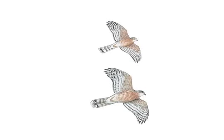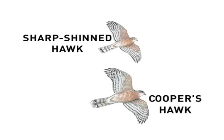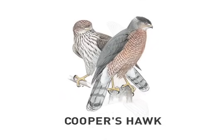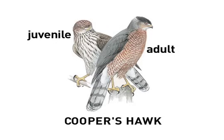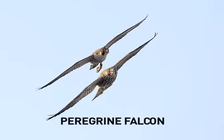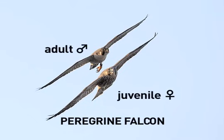Cooper's are bigger than sharp-shinneds, but size can be hard to judge on lone birds. A big immature female sharp-shinned will be close in size to a compact adult male Cooper's. In most raptors, females are a bit bigger than males, and young birds, once fledged, are slightly larger than their parents. Here's a good example of this surprising size differential — a shot of a father peregrine falcon flying with one of his daughters. The adult male is on the left, the juvenile female on the right.